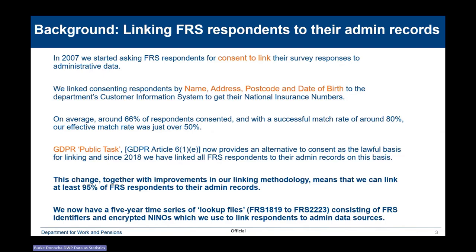This change means we start from being able to attempt to link everybody to their NIN records, or identify their NINOs. Starting from 100%, we've made significant improvements to our methodology, and now we can link at least 95% of respondents to their NIN records. With that, we've now got a five-year time series — we're almost at a six-year time series — and we're doing the final quality assurance of the FRS 23/24 lookup file, which is an extending time series of FRS identifiers and cryptic NINOs used to link respondents to their admin data sources.